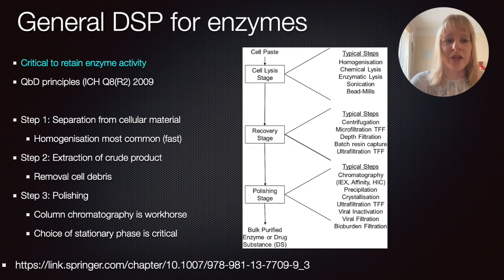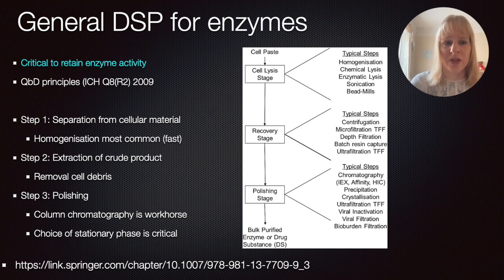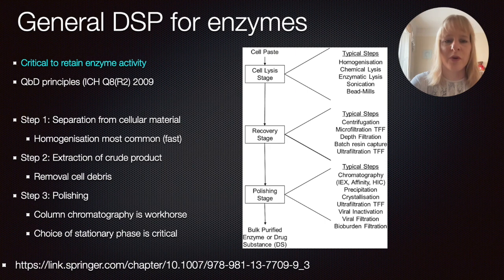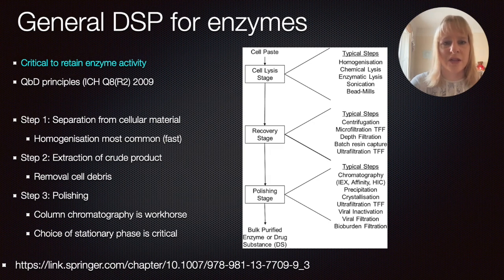The first step is to look at whether your enzyme is made in the cell or extracellularly. If it's made in the cell, which is quite common, then you need to introduce a cell lysis stage to get your enzyme out. By far the most common method remains homogenization, because it's very fast and doesn't introduce damage to the enzymes. Mechanical removal and sonication are also options.